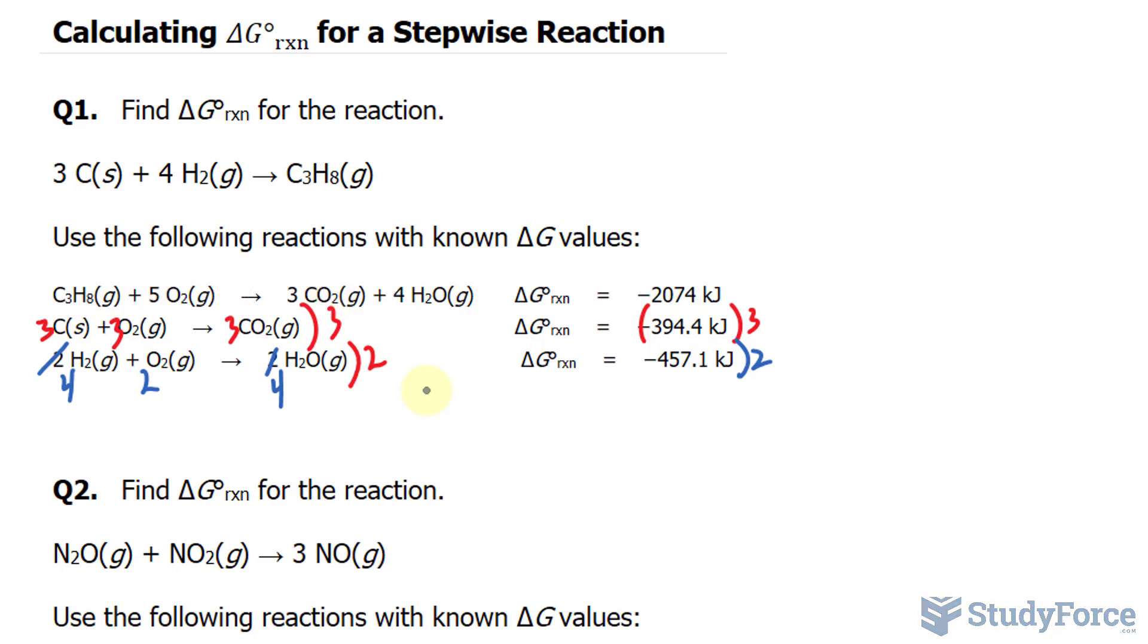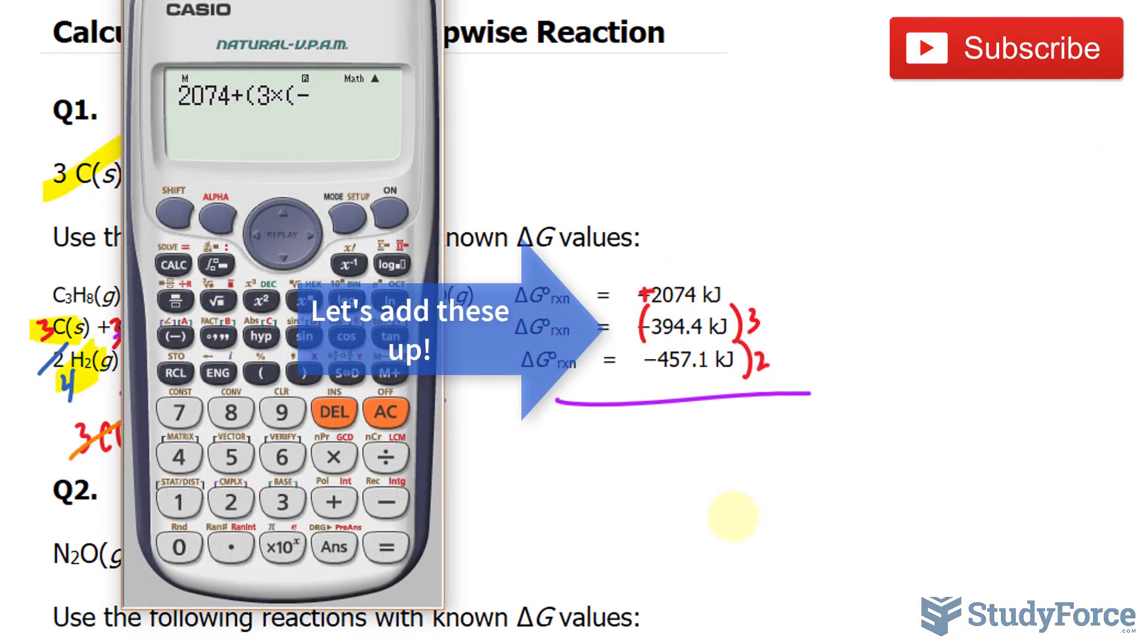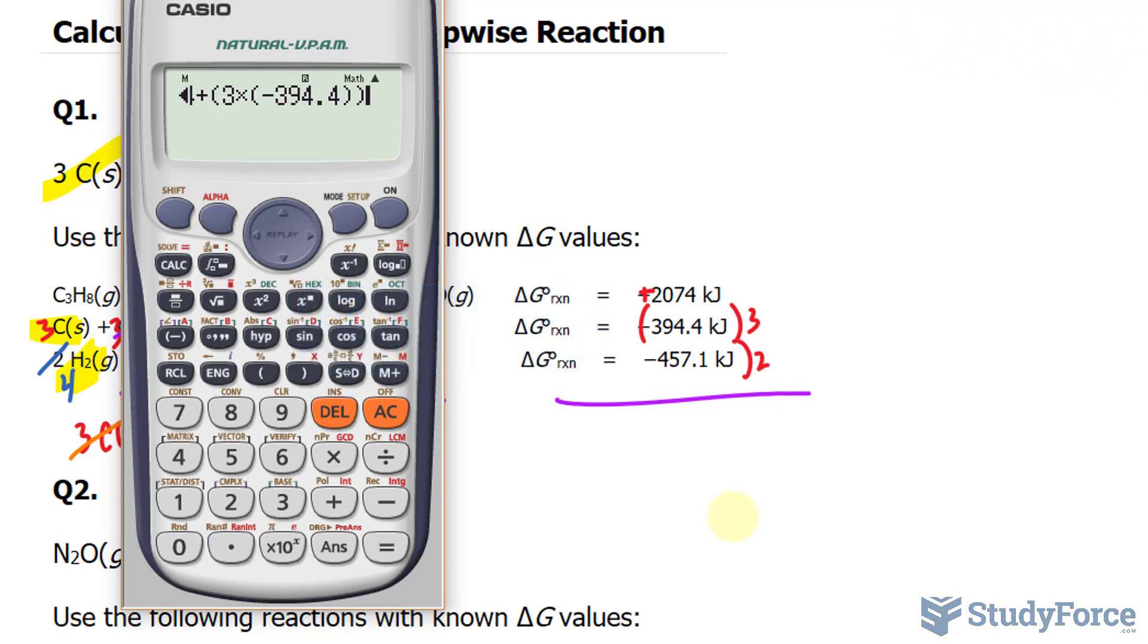Going back to this, if we flip the reactants and the products, we must flip the sign. So that becomes positive 2074. Negative 394.4 plus two times negative 457.1.